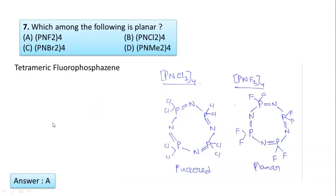Seventh question: Which among the following is planar? PN(F2)4, PN(Br2)4, PN(Cl2)4, PN(Me2)4. Here, tetrameric fluorophosphazene. You see, PNCl4 structure is puckered, while PNF2 is planar. Hence answer A is correct.